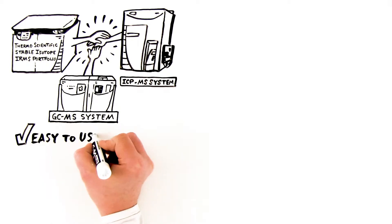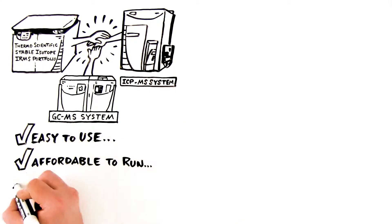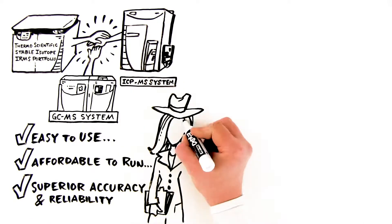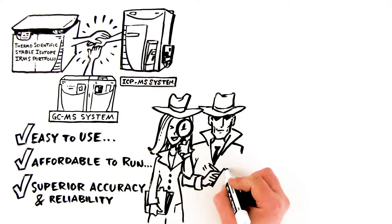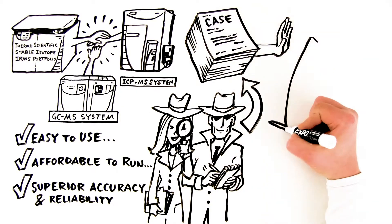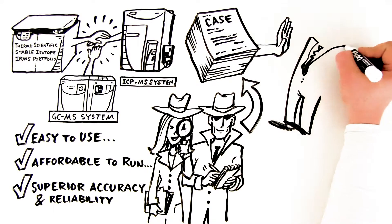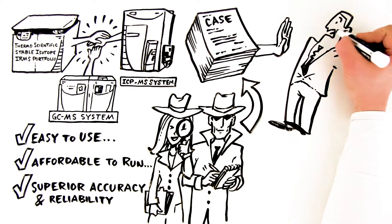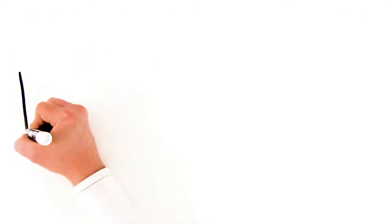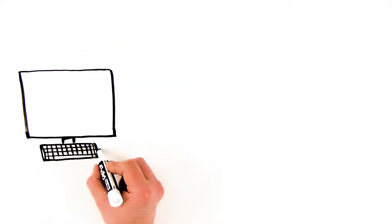Each system is easy to use and affordable to run, with superior accuracy and reliability to boot. With highly reproducible methods and excellent data quality, there's no better way to gather evidence and build your case. Analyze with confidence and hand investigators everything they need to stop polluters in their tracks. History can't hide from the isotope hunter. Make your lab more powerful than ever.